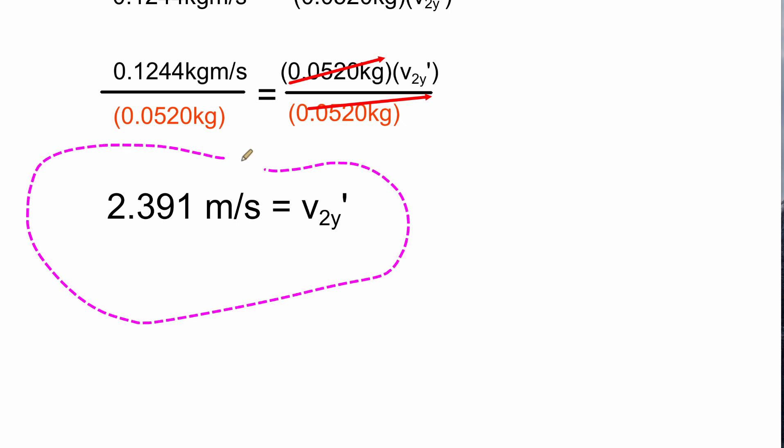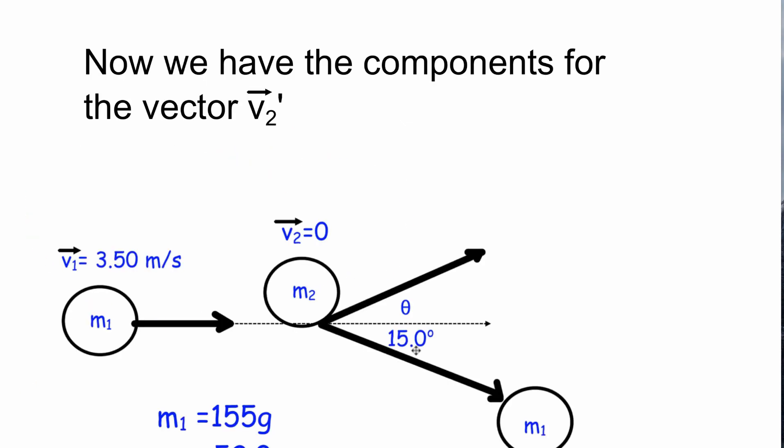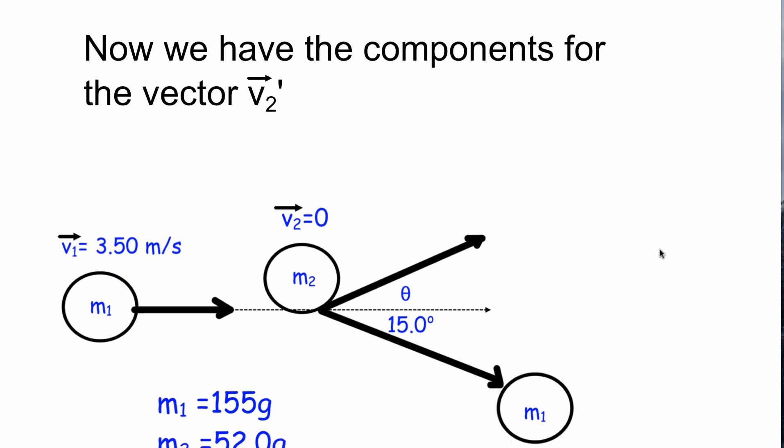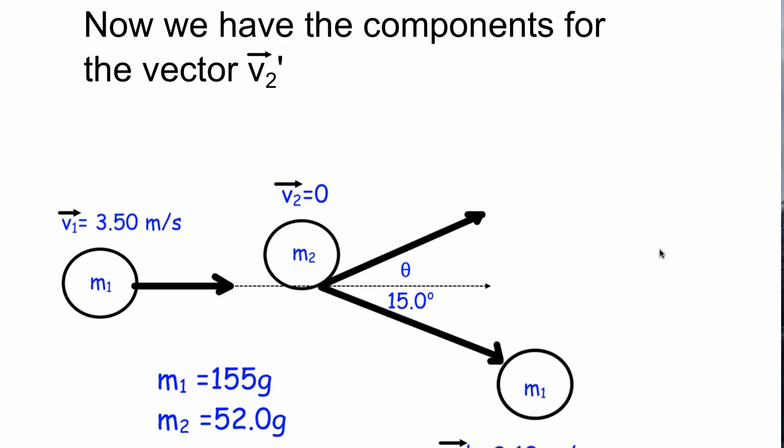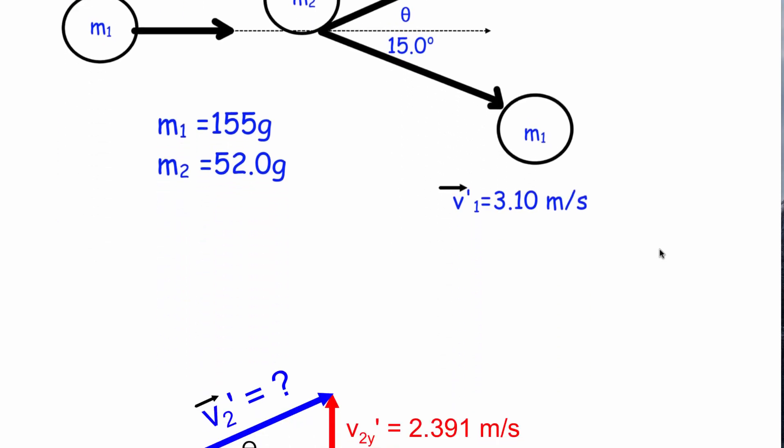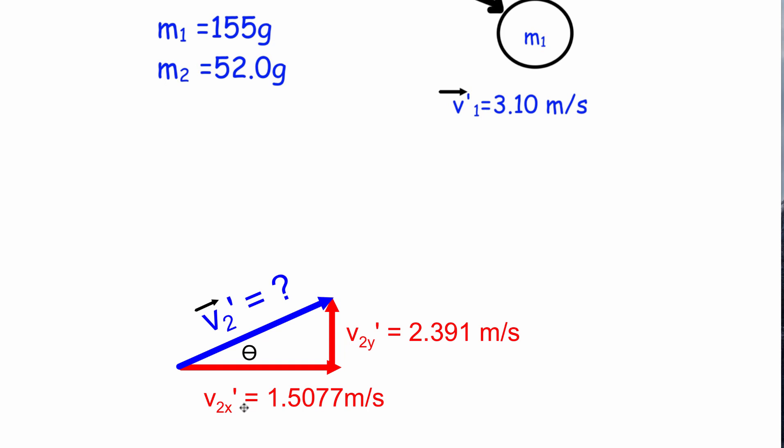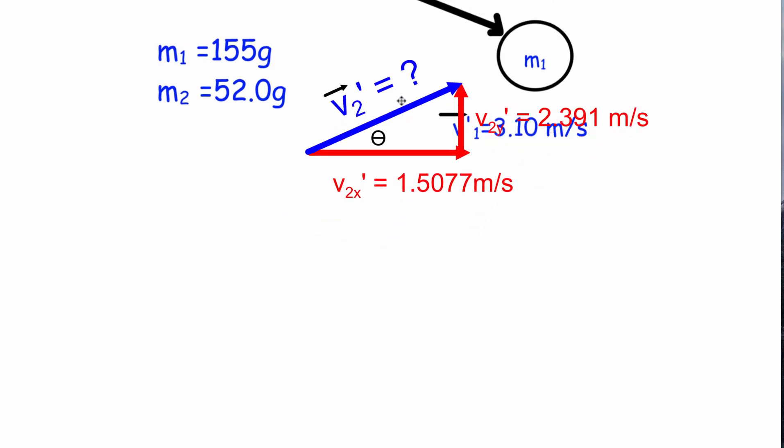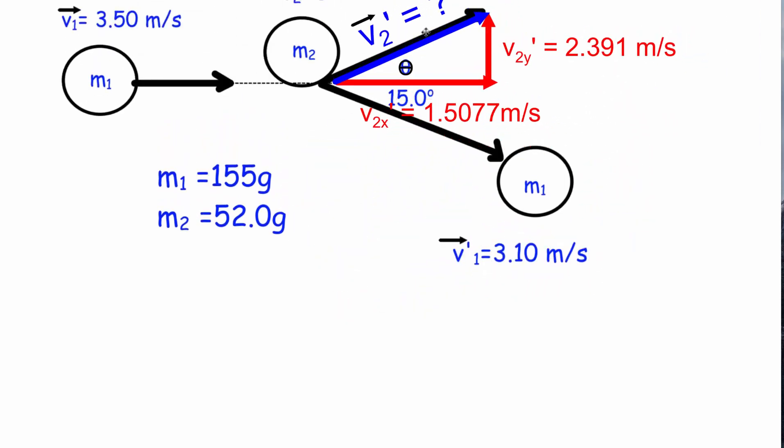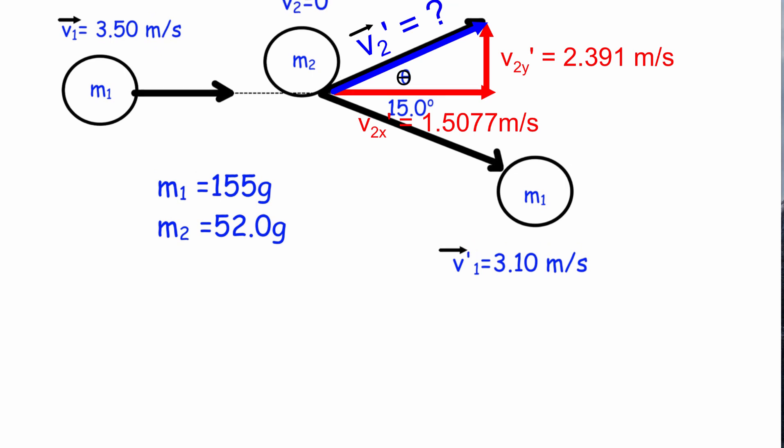We've now found the two components of v2 prime. Now that we have the components for v2 prime we can solve for it. We know that v2x prime was 1.5077 which is this vector. v2y prime was 2.391 meters per second, so it's going vertically up. The hypotenuse will be the vector v2 prime. If we move it up to our original diagram we can see that we're solving for v2 prime and then we want to solve for the angle theta.